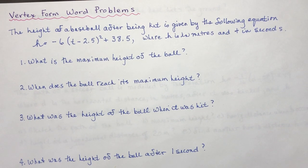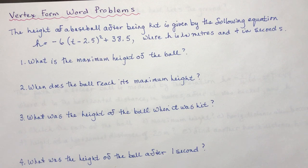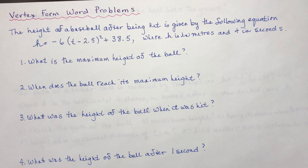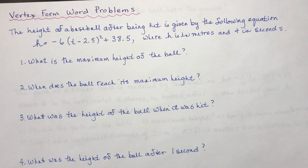Vertex form word problems: vertex form is really the best quadratic equation to use for anything to do with projectiles — things being fired from the ground, whether it's fireworks, shooting a bow and arrow, or throwing something off a roof. Because when an equation is in vertex form, you can find the maximum height and know the time when that happens. When you have a word problem involving finding the vertex of a parabola, you want to get your equation into vertex form.